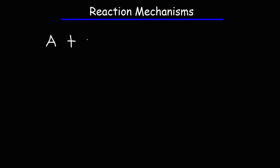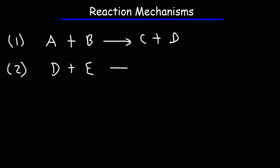Let me give an example. Let's say this is the first step of a certain reaction: A plus B becomes C plus D. Step 2 is going to be D plus E, and that turns into F plus B. The series of these two steps is known as a reaction mechanism. Each individual step is an elementary reaction. We can write a rate law expression for each elementary reaction based on the coefficients of the reactants.